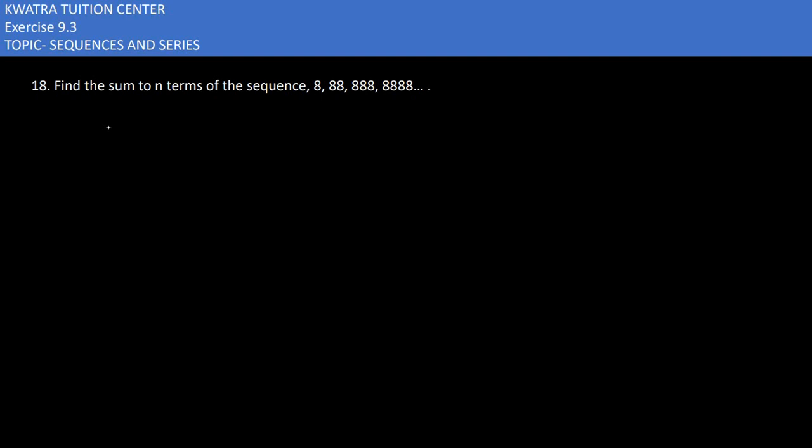Starting with the 18th part here, it says find the sum of n terms of the sequence 8, 88, 888, and 8888 to n terms. Now this is not going to look like a GP, but we will convert it into a GP.